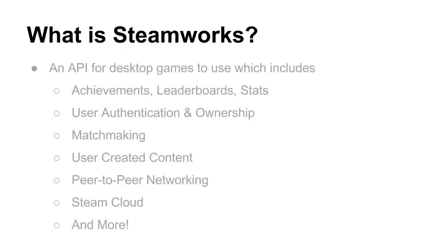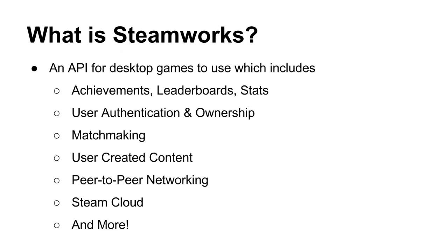So what is Steamworks? Steamworks is an API for your games. It allows you to do achievements, leaderboards, and stats. Achievements let you set a rule in your code and grant an achievement. Leaderboards are high scores and similar things. Stats — in Imagine Me, I have stats for how many games you've played, how many you've lost, and a random stat my community loves: how many times a cat has interrupted gameplay, which you can only get by mashing on the keyboard.